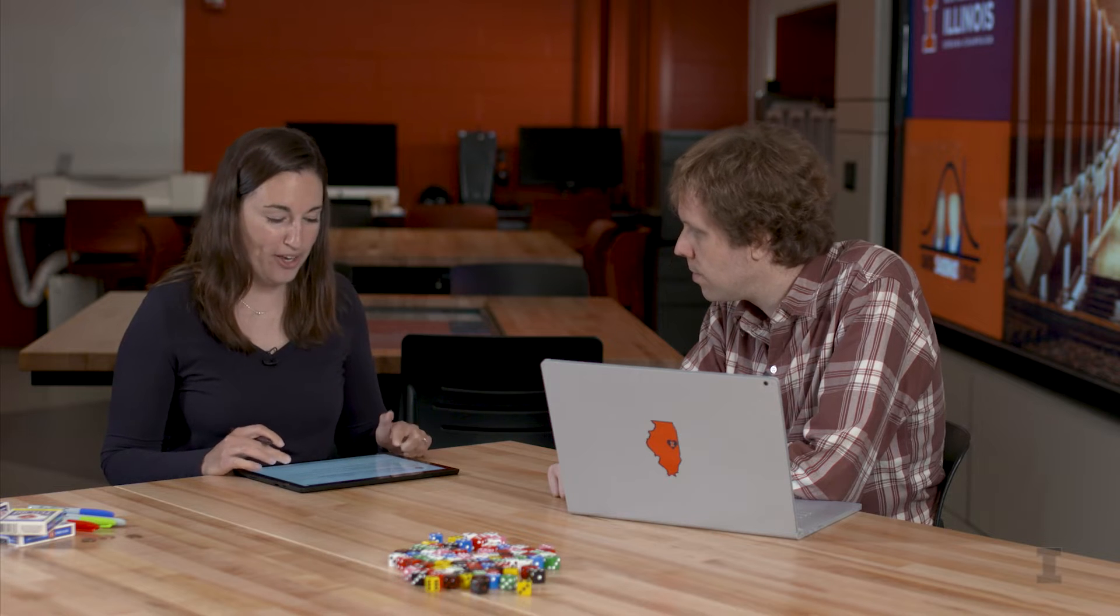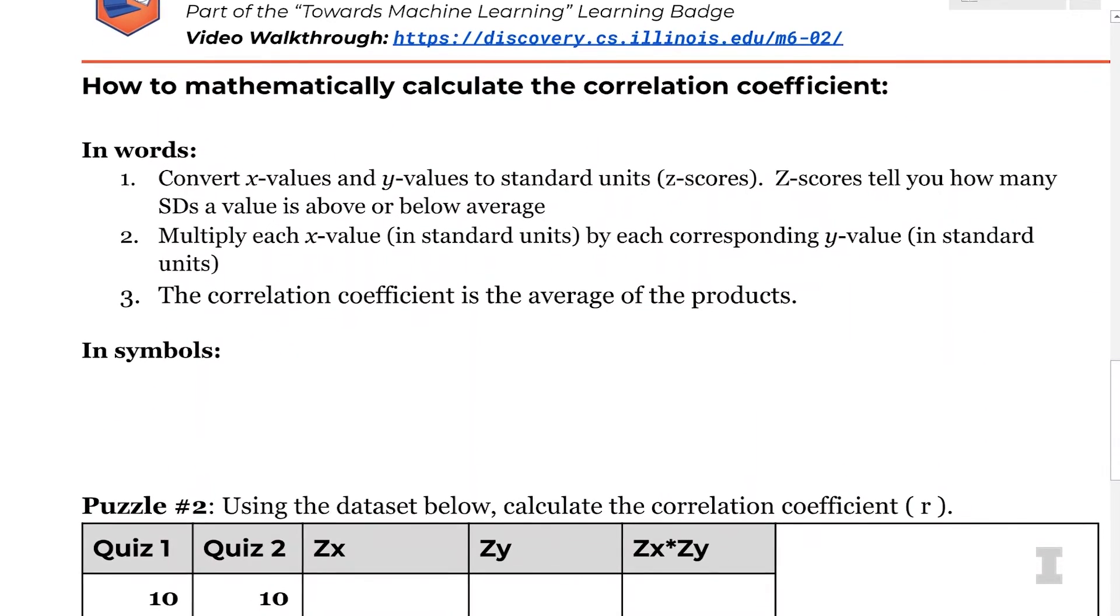So you may be wondering at this point, okay, the correlation coefficient is a statistic that can help us look at the relationship between an x and y variable, but how do you calculate it? So how do we mathematically calculate the correlation coefficient? And I have the description here in words of how we go ahead and do this. Basically, we want to take both of our x's and y's and convert them all to z-scores. We know that z-scores are standard units, which is really nice. Then we want to multiply the z-score for x by each corresponding z-score for y to kind of put those points, make sure that the two values are together. And then the correlation coefficient is the average of those products. So if I was going to write this in symbols, I would say that r is equal to the sum of each z-score for x multiplied by its corresponding z-score for y. And then to turn that sum into an average, I'm going to divide by n.